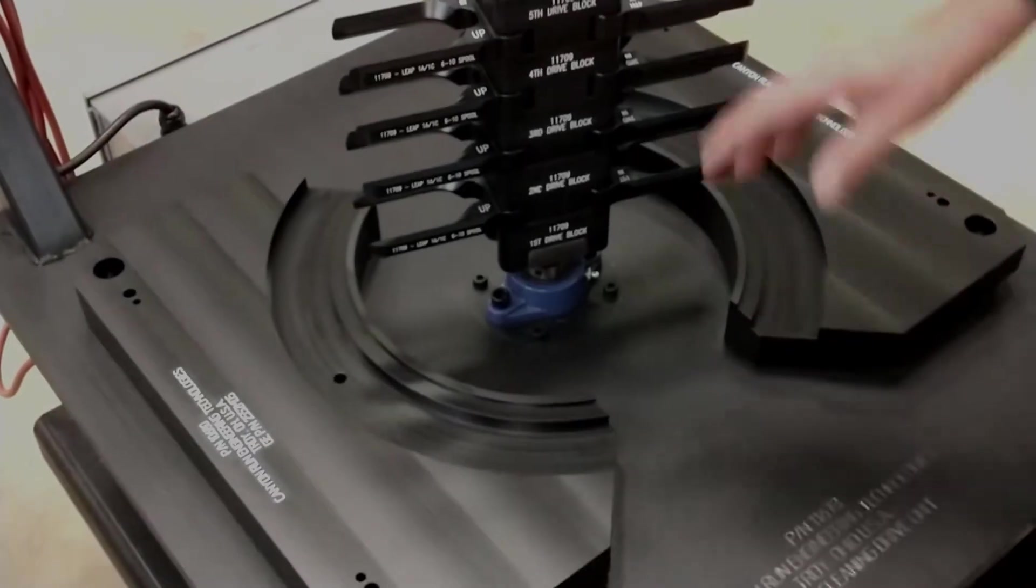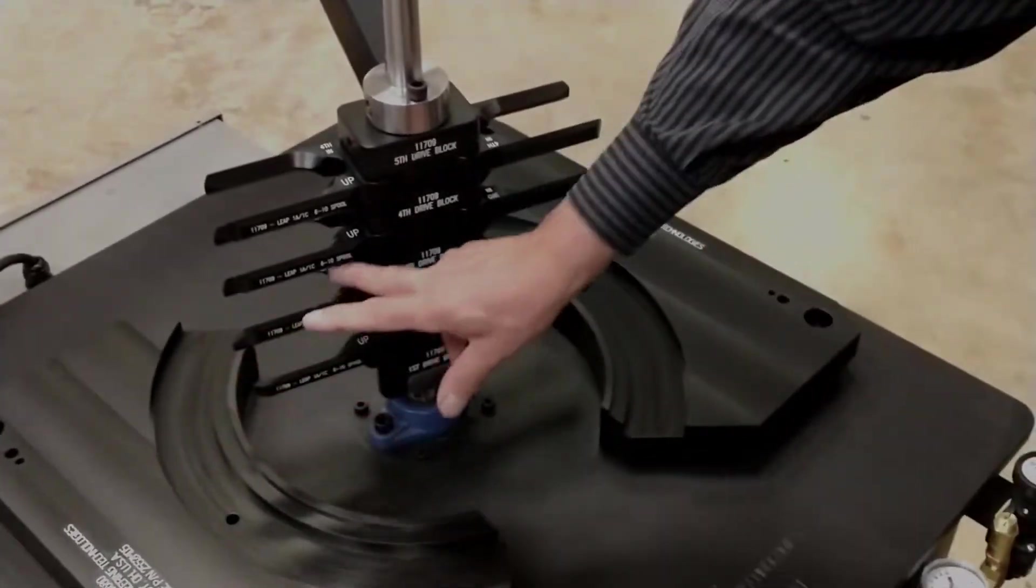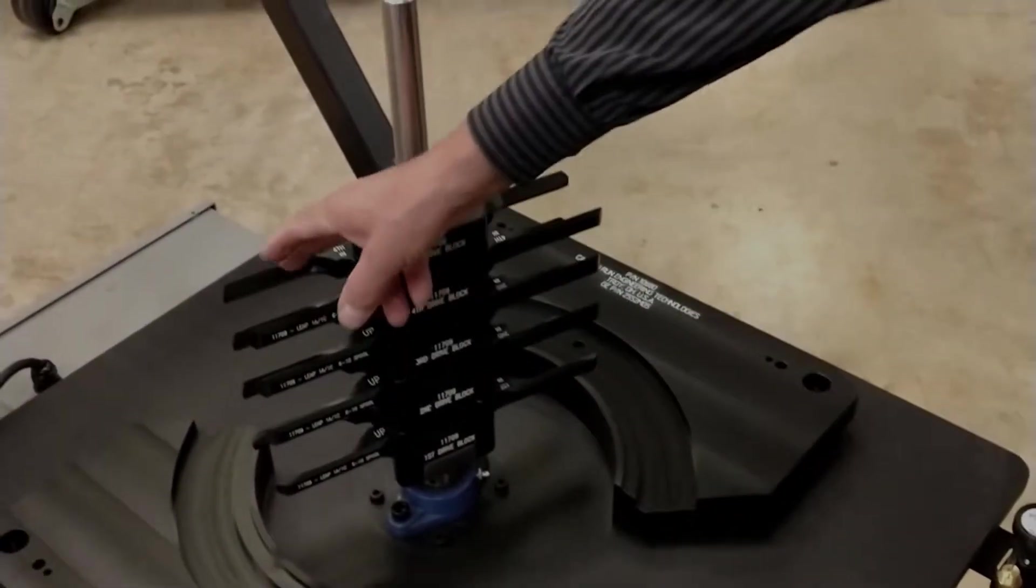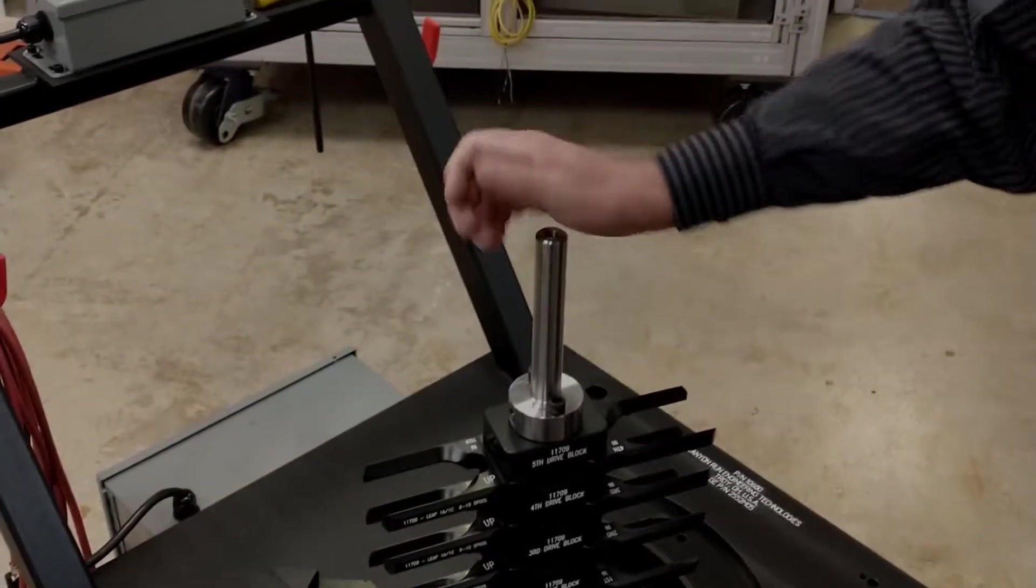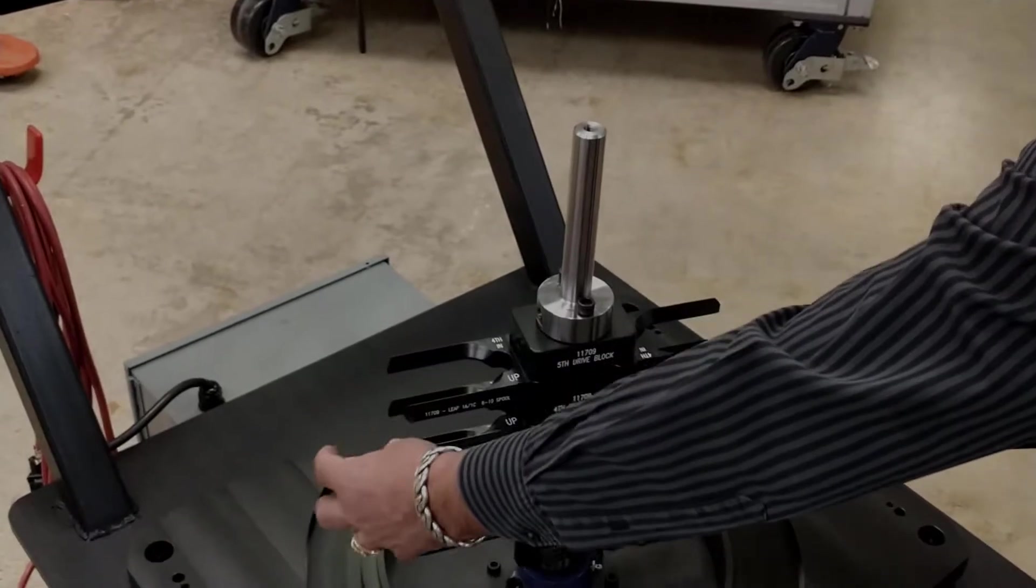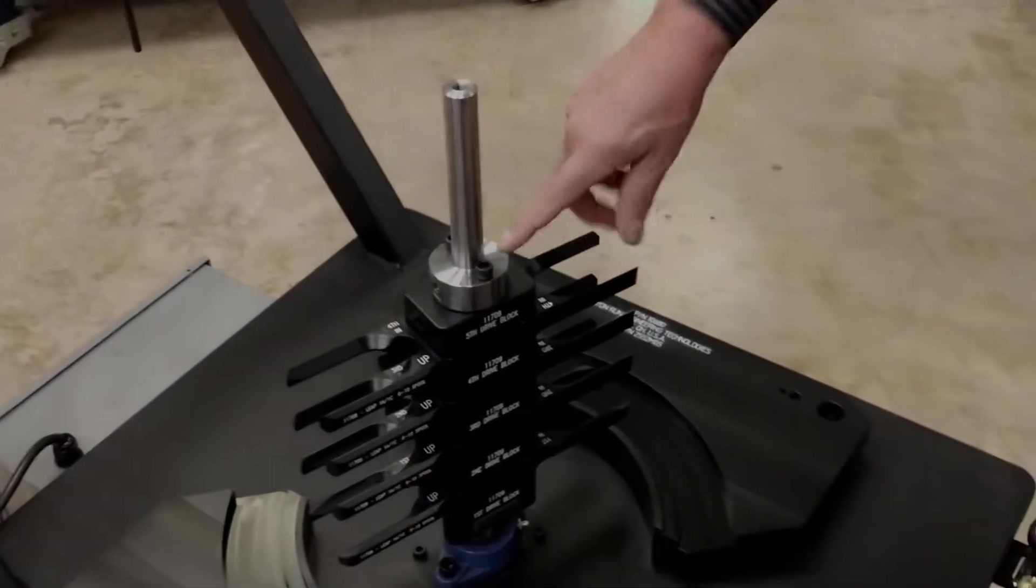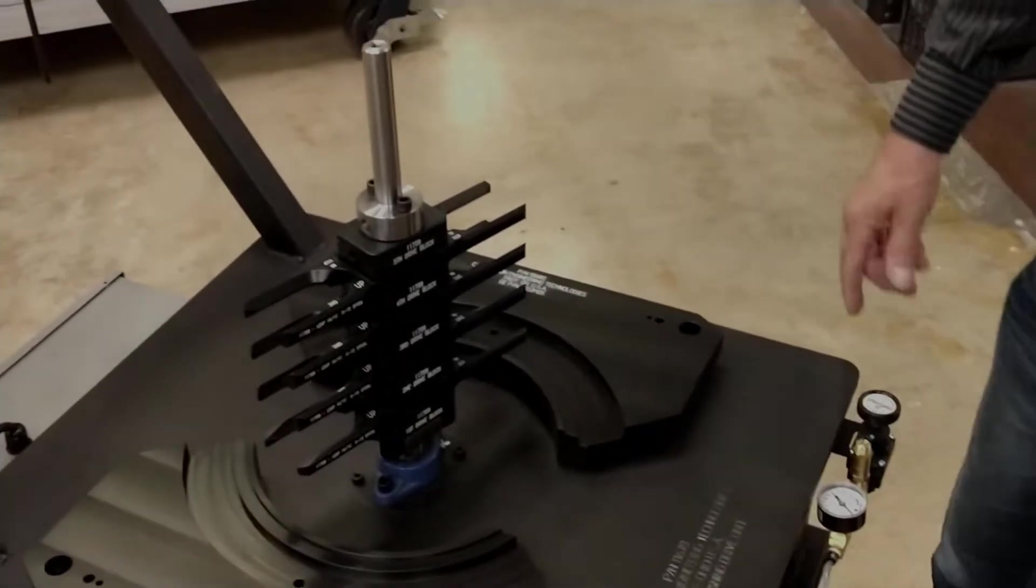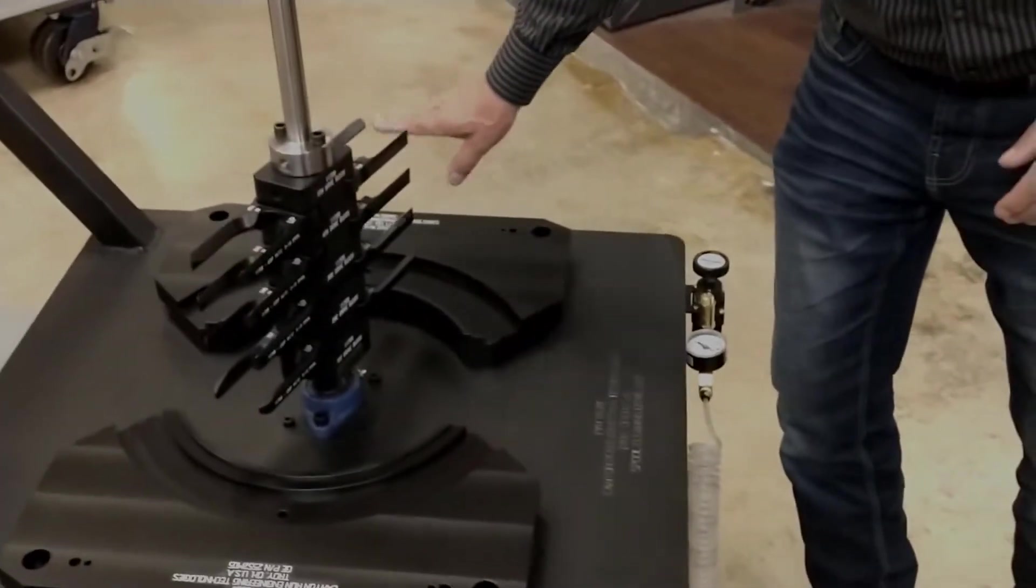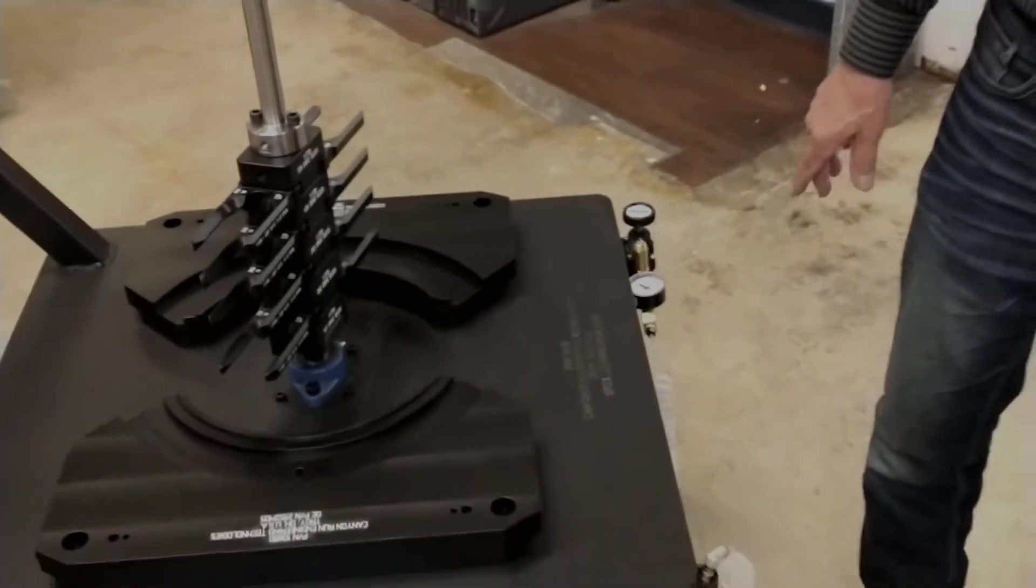So they would put our fixture on. There are airbags that go inside of these that get scotch-brite on them. There's one air connection here and all these airbags blow up inside the webs. And then this will rotate at a slow RPM and it polishes the web and ID of the inside of the spool.